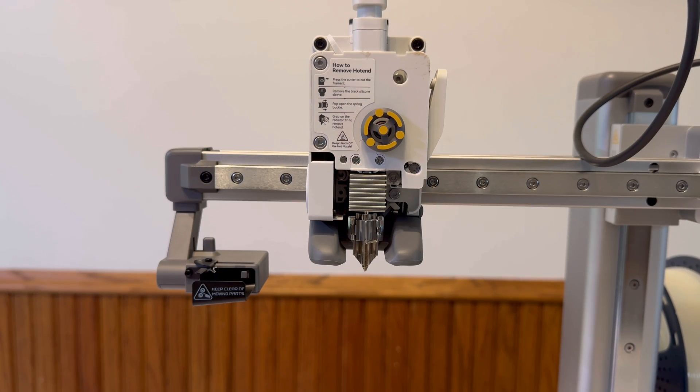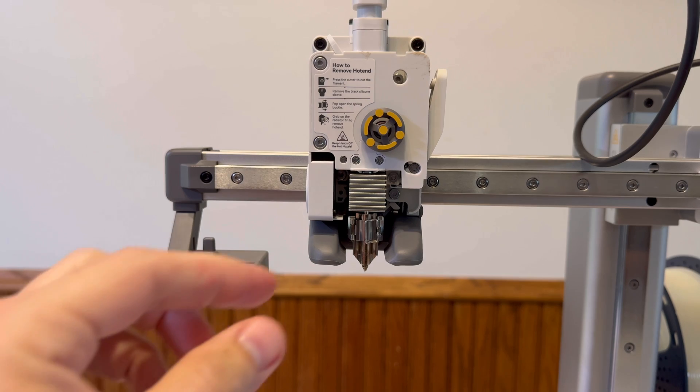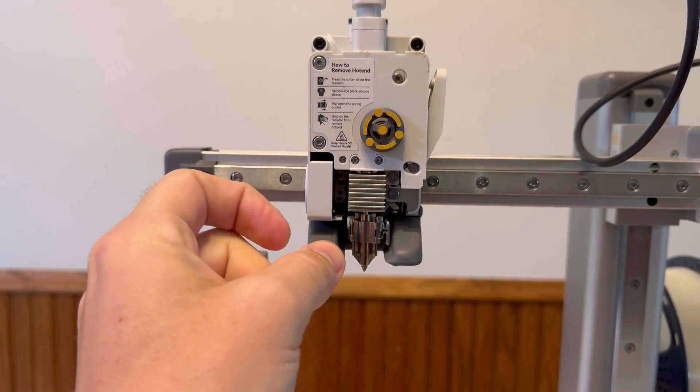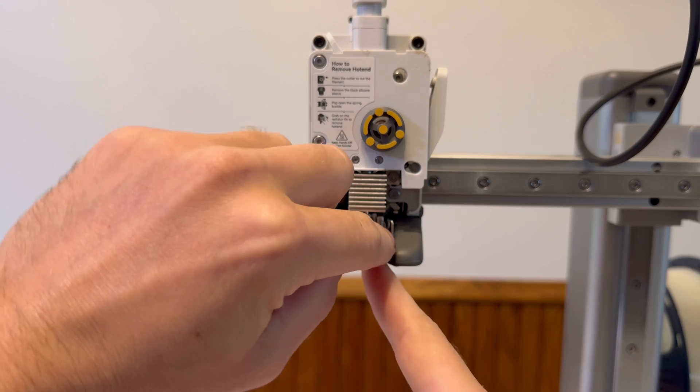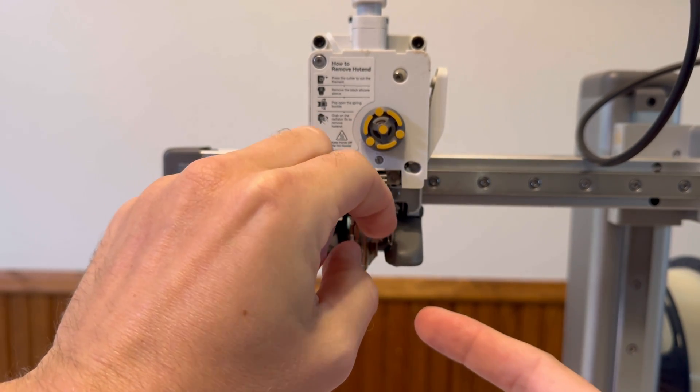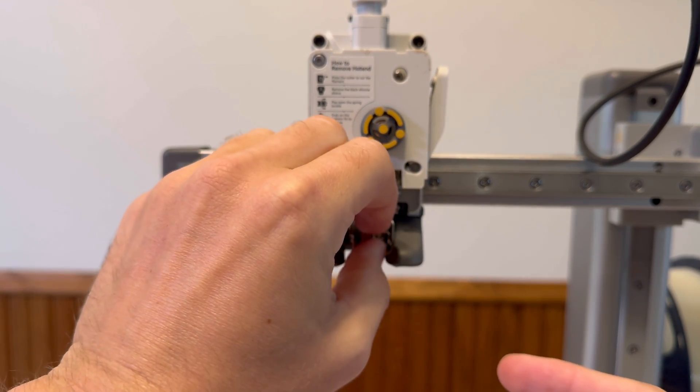Next what we're going to do is actually remove the nozzle here. There's a little clasp here so what we can do here is undo that and then there's another little flap that we got to push left. You can use your hands here or you can use like a small screwdriver.